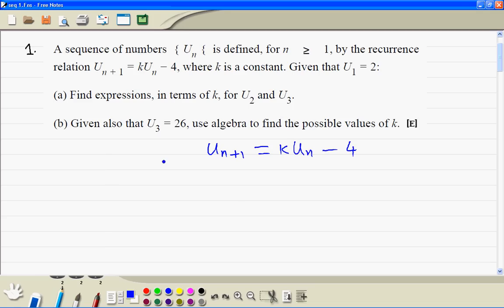So now we know the first term. So u_1 is equal to 2. In order to find the second term, it would be k times the first term, that's 2k minus 4.